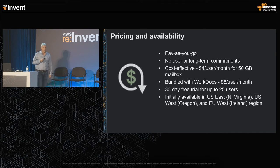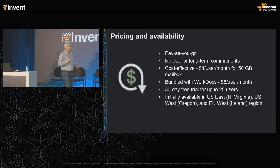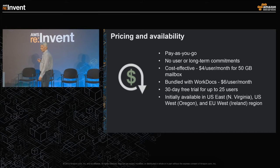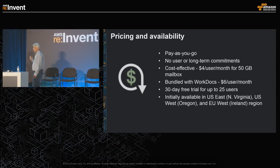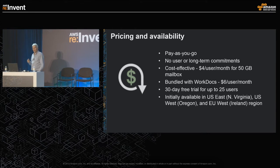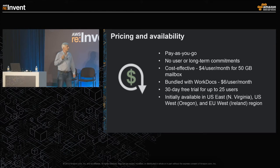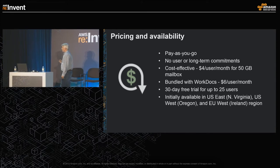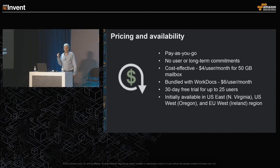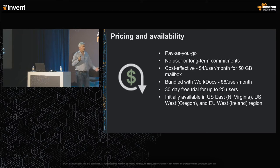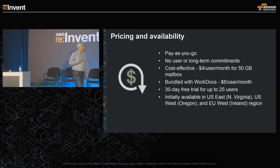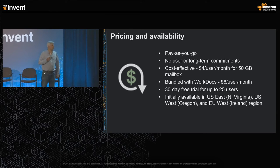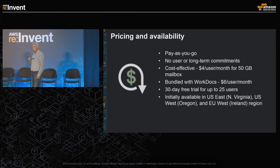With Amazon WorkMail, there are no big upfront investments — it's a pay-as-you-go model with no long-term commitments. We charge $4 per user per month for a 50-gigabyte mailbox. We also offer a bundle with Amazon WorkDocs at $6 per user per month, which includes 200 gigabytes of WorkDocs storage. We offer a 30-day free trial, and you can have a complete enterprise email and calendaring service running within 10 minutes. We're currently available in US East, US West, and EU West, with additional regions planned.